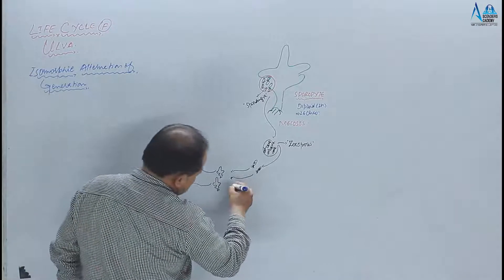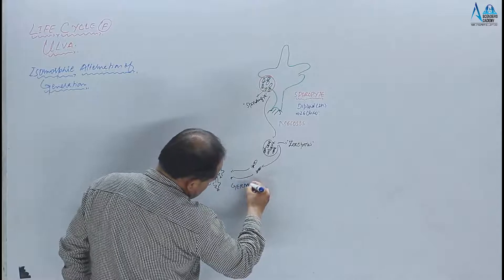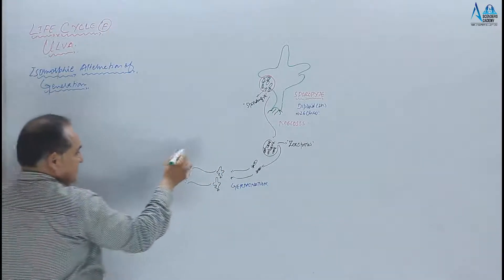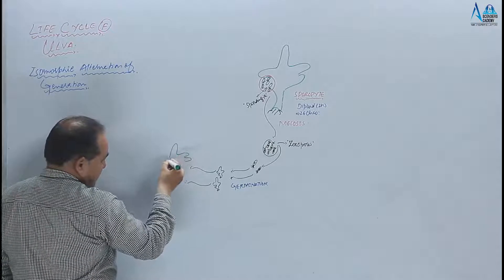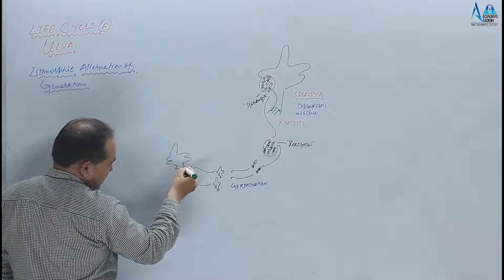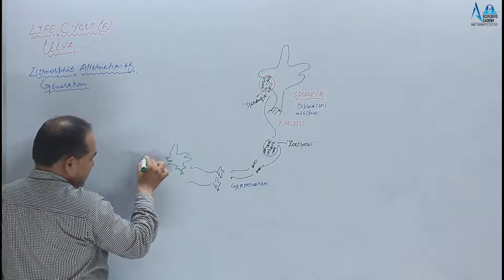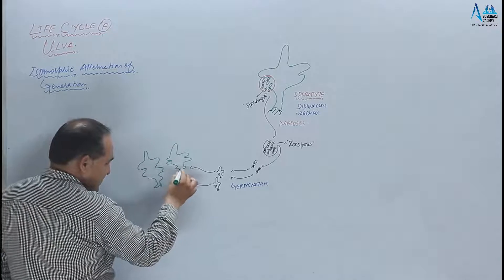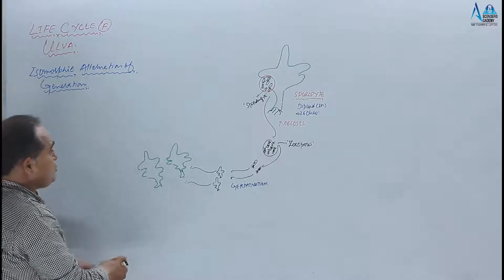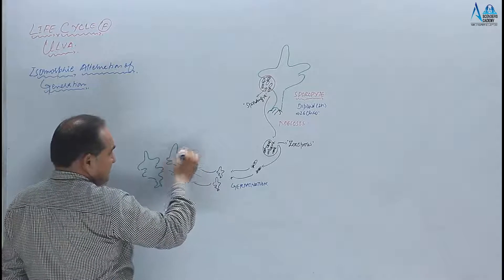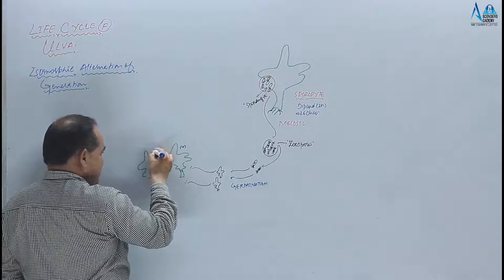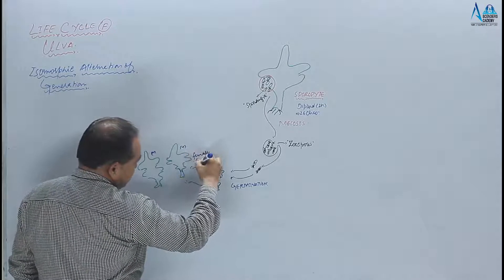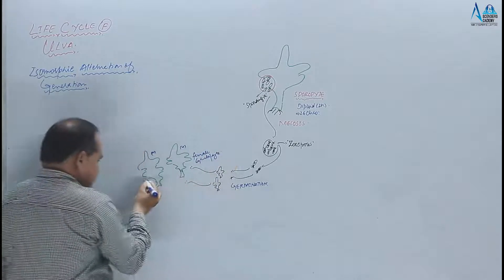Germination ka process yahan ho raha hai — zoospores female gametophyte aur male gametophyte mein change ho jaate hain. Yeh do gametophytes ban gaye hain. Dono haploid hain, N number ke saath, kyunki jo spores banay they woh haploid thay.